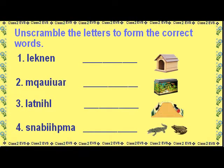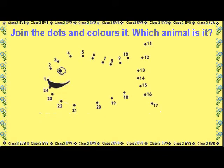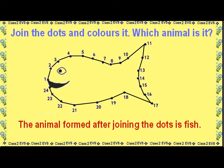Unscramble the letters to form the correct words. The word formed is Kennel. The word formed is Aquarium. The word formed is Ant Hill. The word formed is Amphibians. Join the dots and color it — which animal is it? The animal formed after joining the dots is Fish.